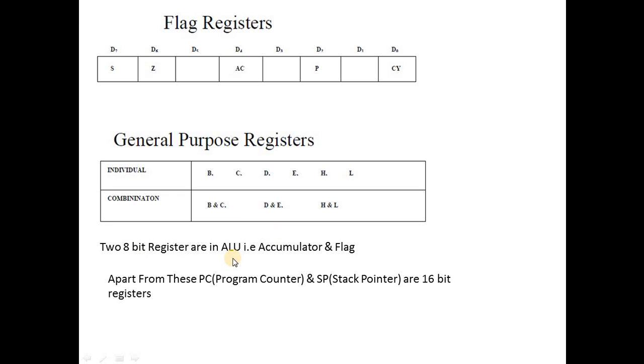There are two output registers in the ALU: accumulator and flag. Apart from this, there are two registers: PC (program counter), which indicates where the next instruction is to be loaded, and SP (stack pointer), a 16-bit register indicating the address of the top of stack.